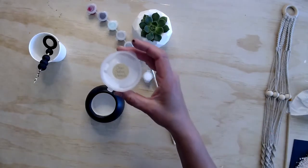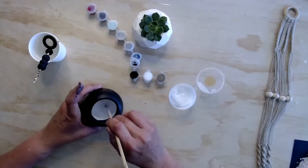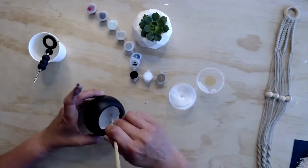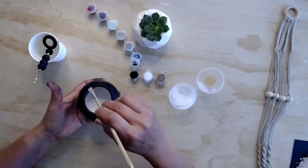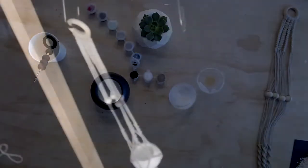Next we're going to apply some clear satin varnish on the inside of our bowl. Sit these to the side to dry. So let's get started on our macrame plant hanger.